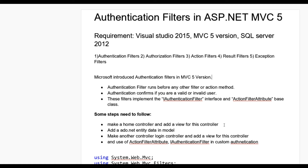The second step is to add an Entity Data Model. Then make another controller — a Login controller — and add a view for it with some text boxes for login, user ID, and password. Then write some code and apply the action filter to implement IActionFilter in the custom authentication.